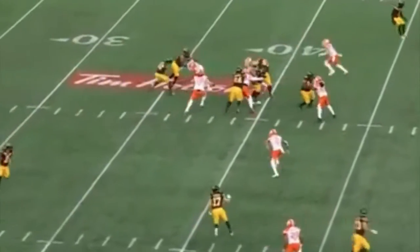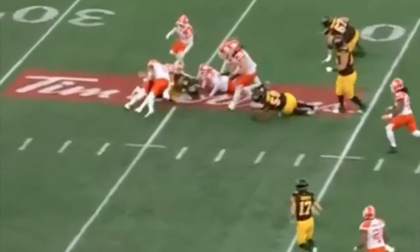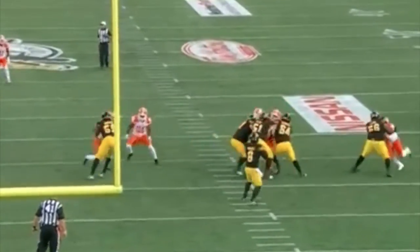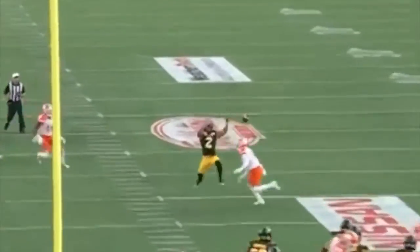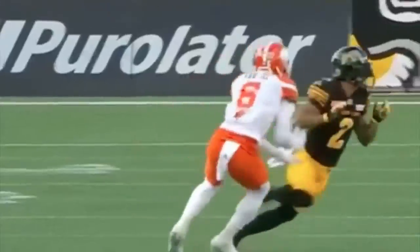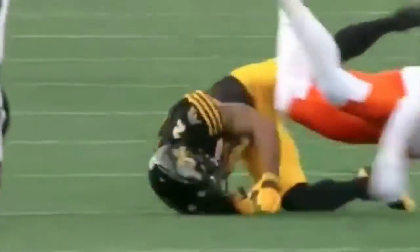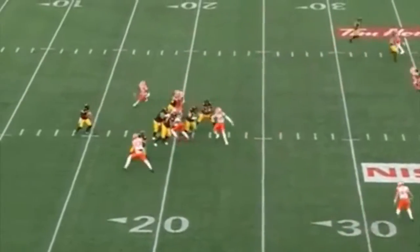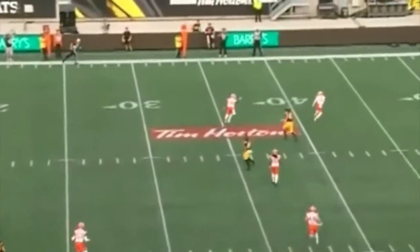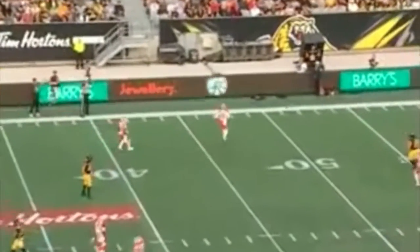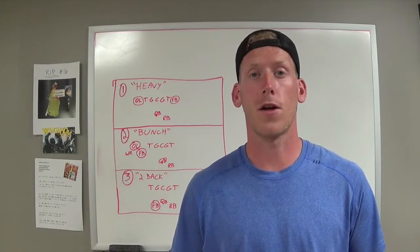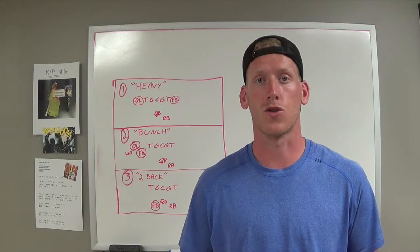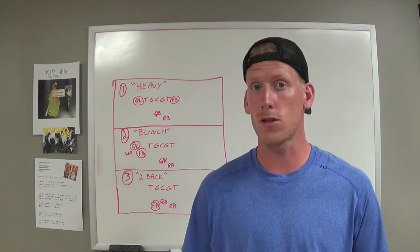First off, and this goes without saying, the Ticats offense simply did not do a good enough job of staying on the field. BC ran 56 offensive plays to Hamilton's 47. That difference of nine plays was caused by Hamilton going just 38% on second down conversions and losing the time of possession battle by nearly 12 minutes. So how did BC convert on their second down opportunities and also control the clock by more than 12 minutes over the Tiger Cats?